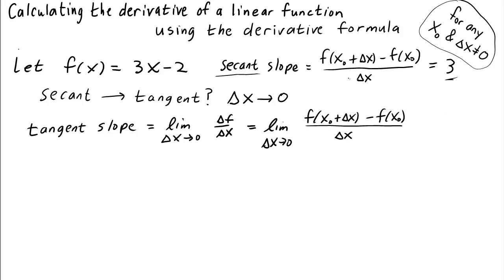This is pretty easy. We know what this is. It's just 3. So the tangent slope is the limit as delta x goes to 0 of the secant slope 3. So what is the limit of the number 3 as delta x goes to 0? Well, as delta x gets smaller and smaller, nothing happens to the number 3. It's always just 3. So this limit is just equal to the number 3.